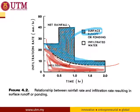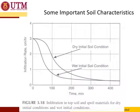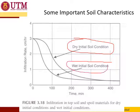We want to know how much becomes losses and how much becomes runoff. The area above the infiltration curve is the runoff. If we plot infiltration rate against time for a dry initial condition versus a wet initial condition, the infiltration rate may be different. If the soil is wet, there will be a lower infiltration rate; if the soil is dry, there will be a higher infiltration rate.